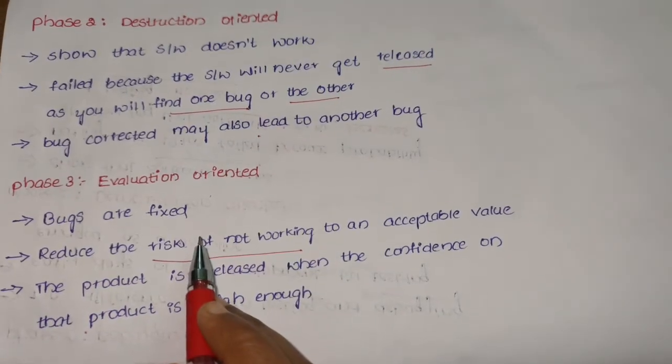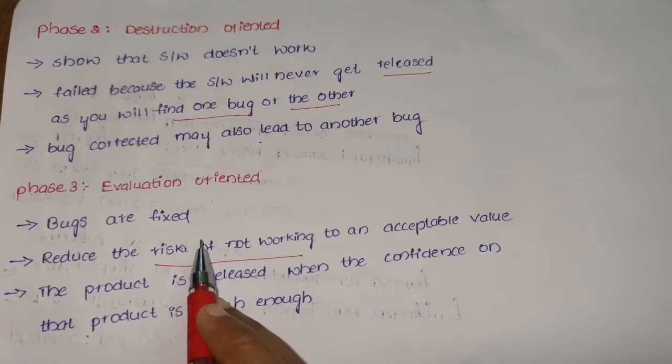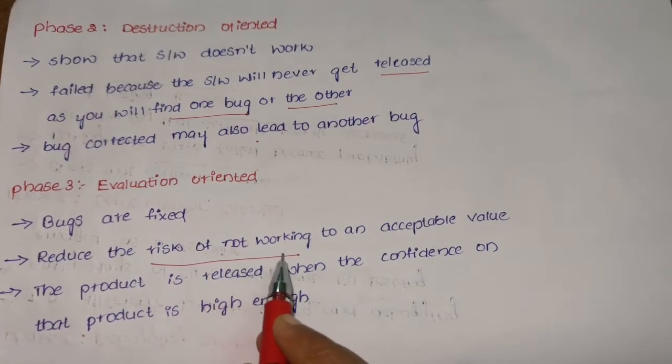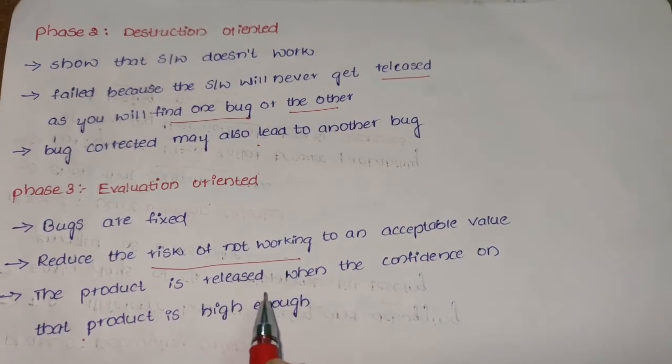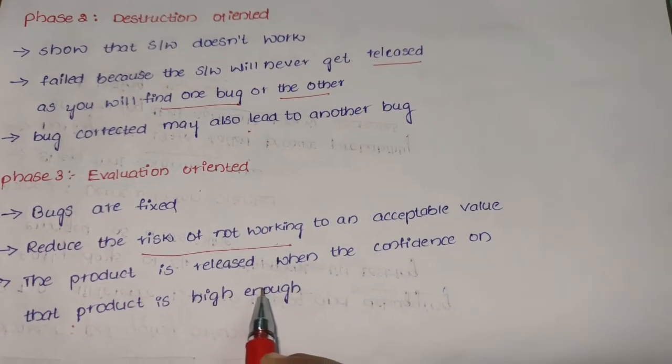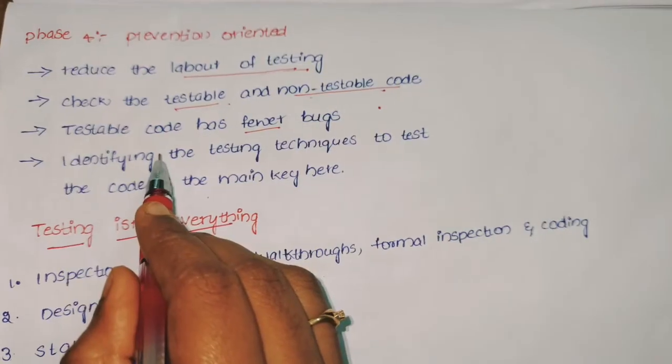Phase 3 evaluation oriented: in this, the bugs and errors are fixed, reducing the risk of not working of any software. The product is released when the confidence on the product is high enough.